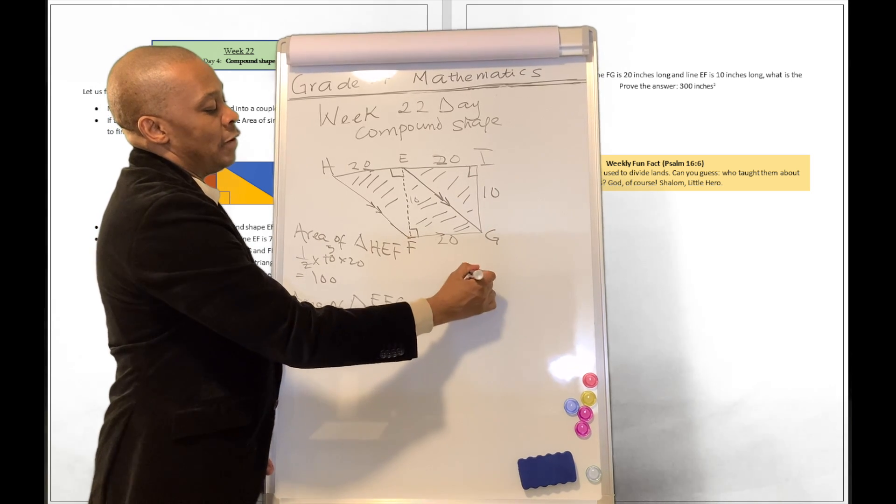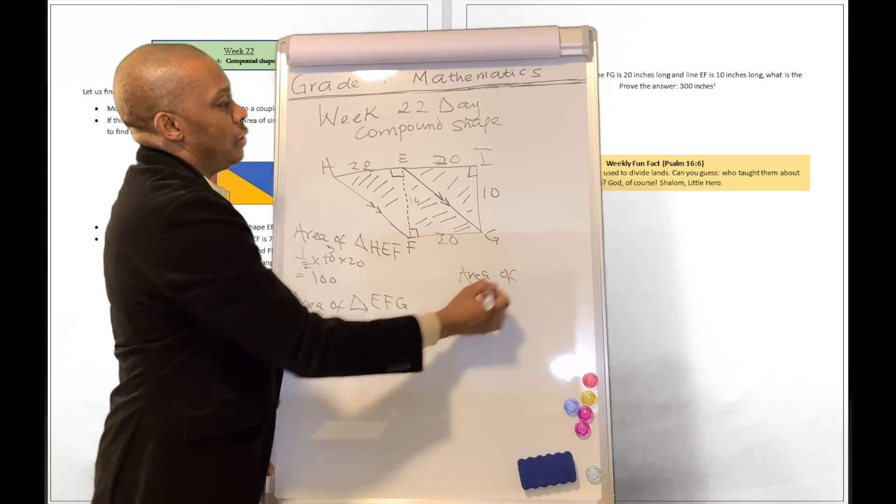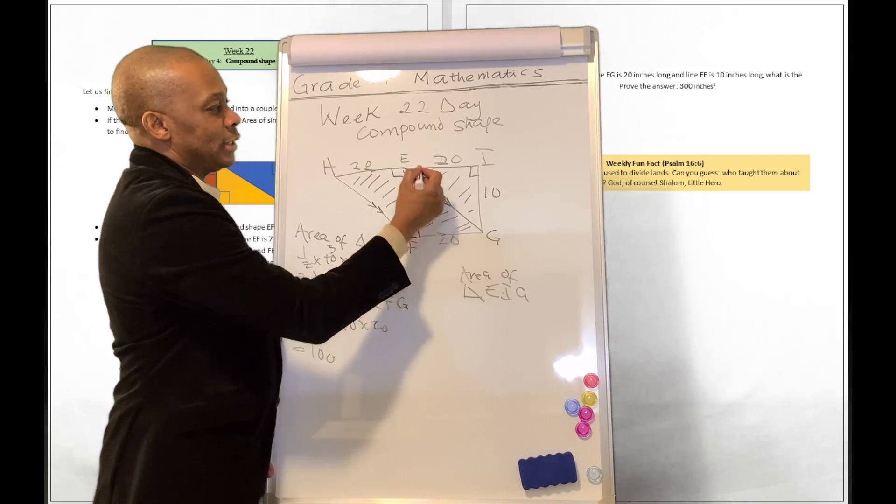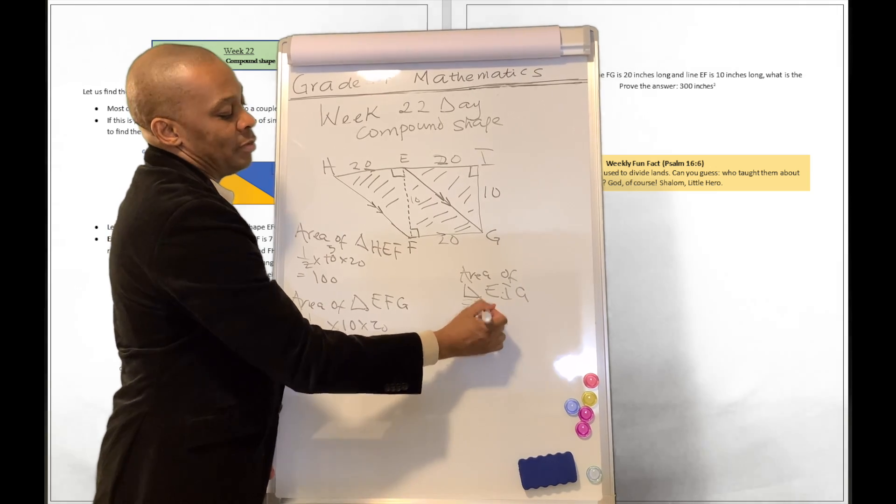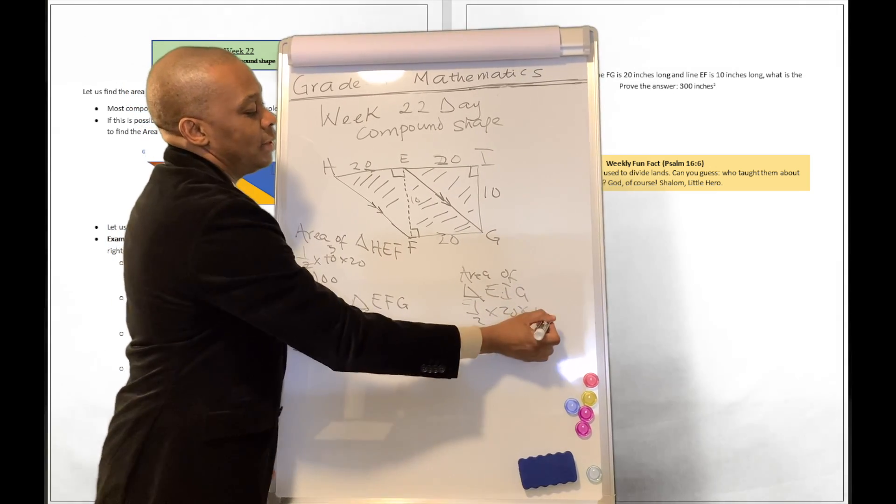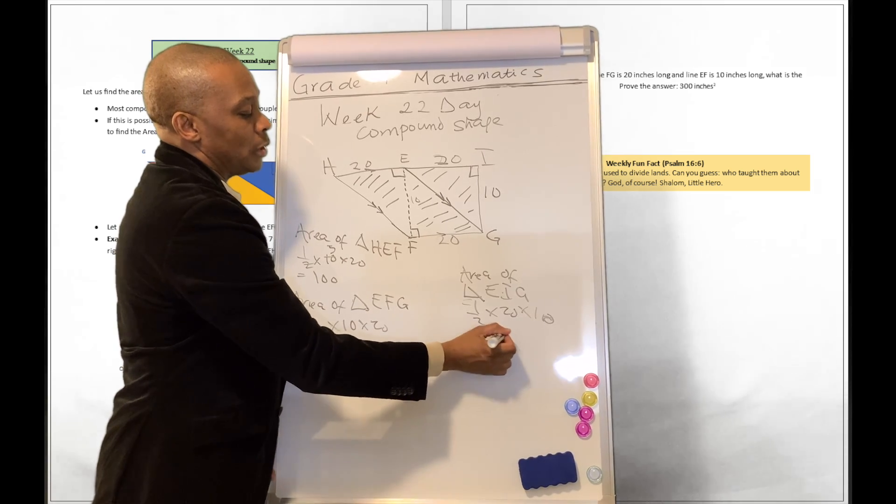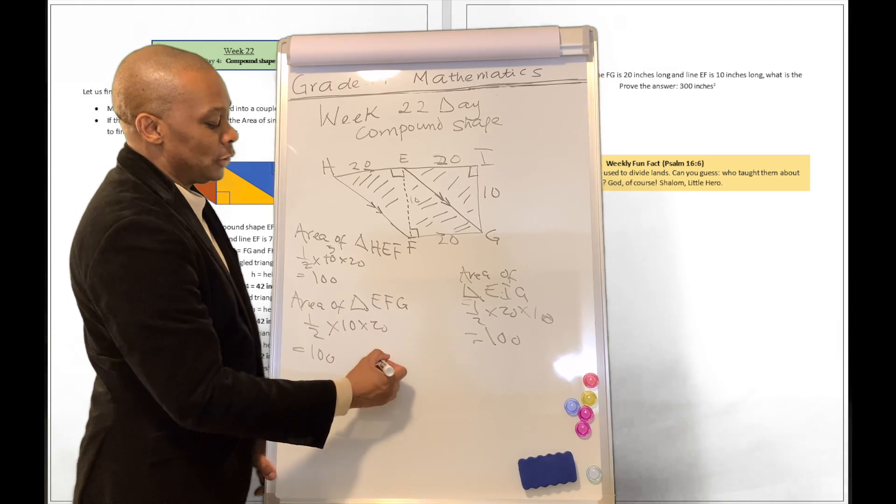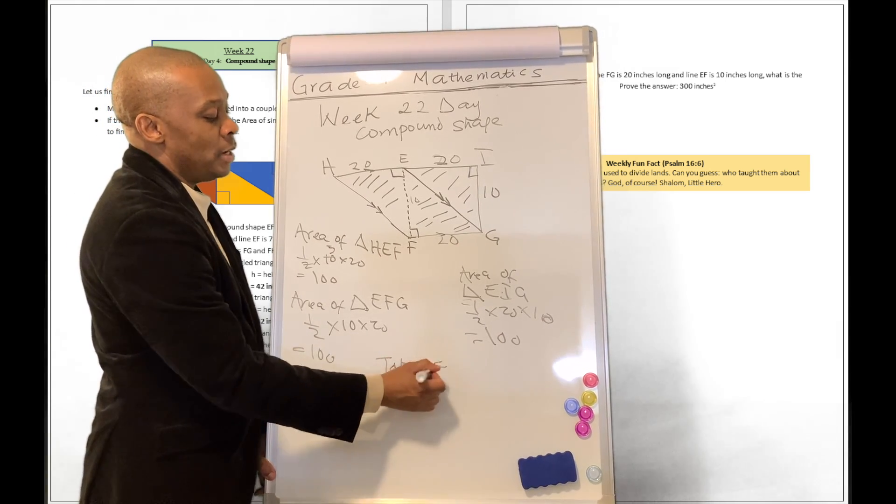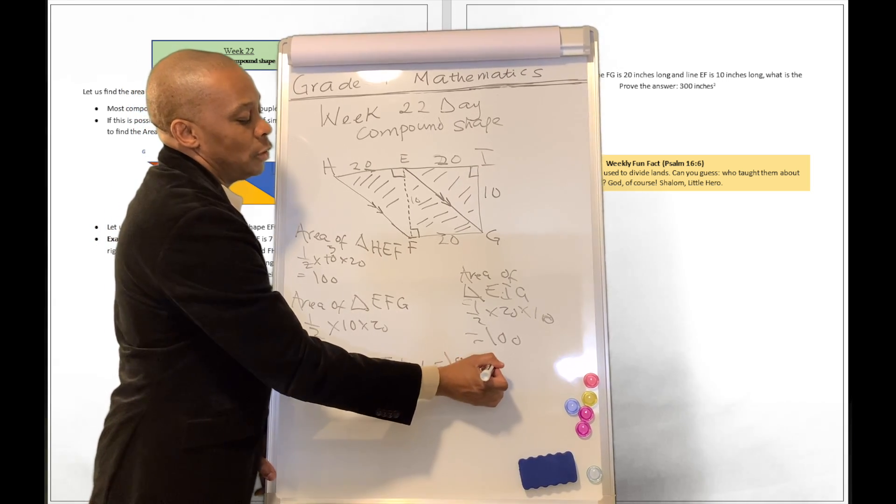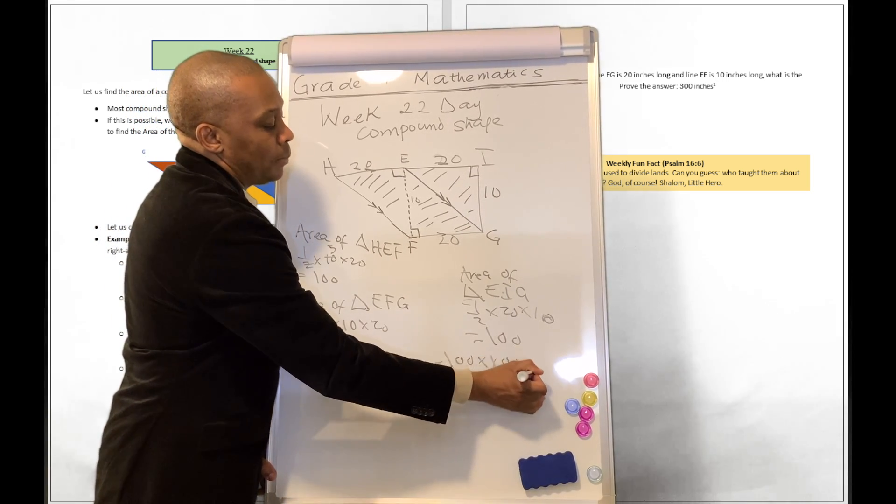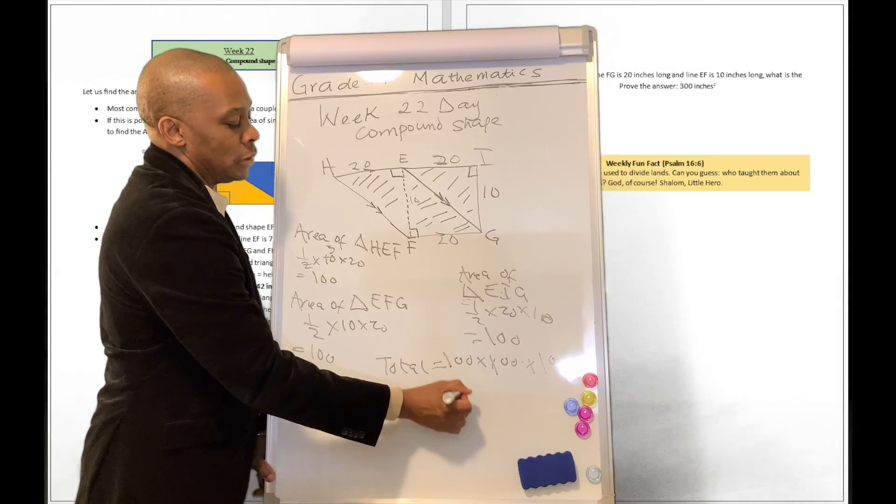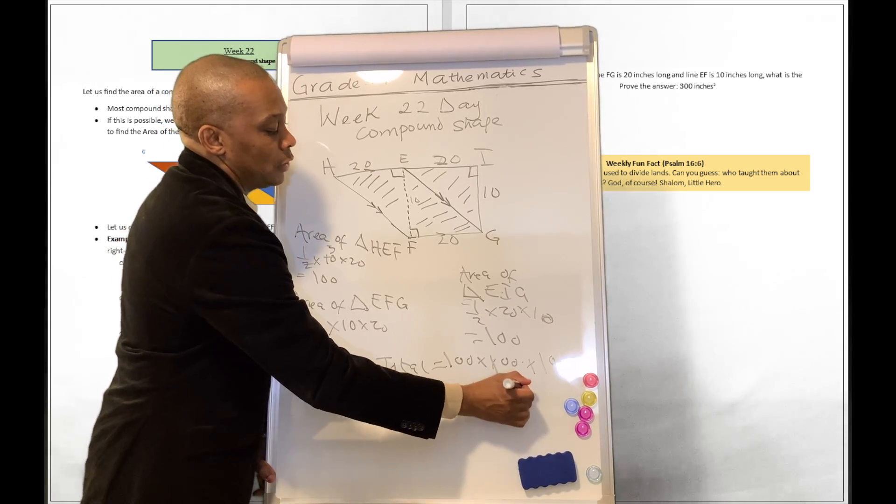What about the area of the right-angled triangle E, I, G? That's going to be half multiplied by 20 multiplied by 10, and that's going to give us 100 as well. So what are we going to do? Add it all together. Total area of the compound shape is going to be equivalent to 100 plus 100 plus 100, which gives us 300 inches squared.